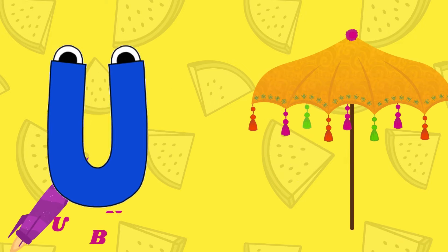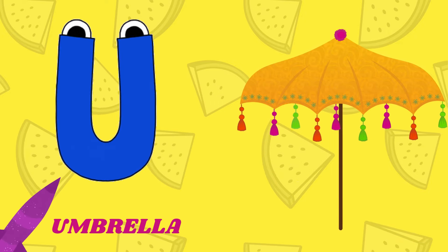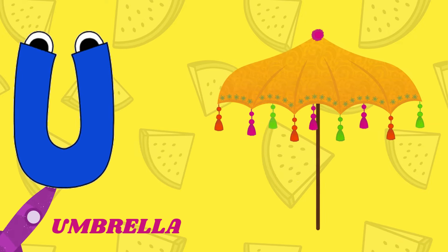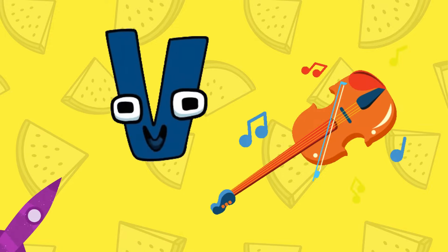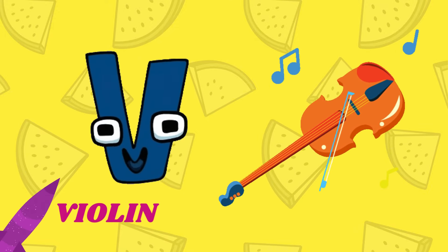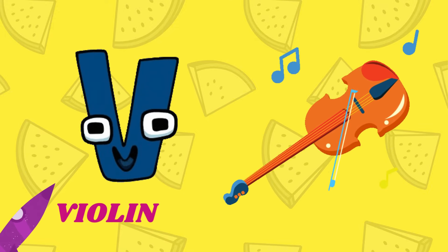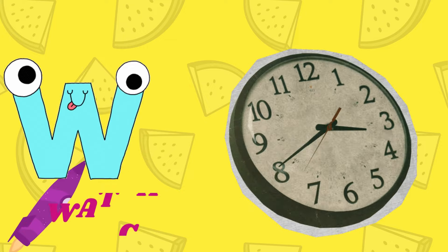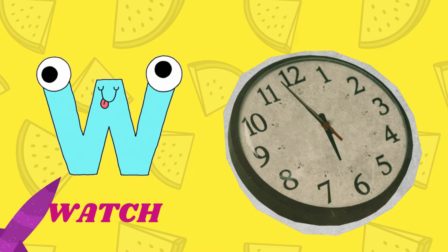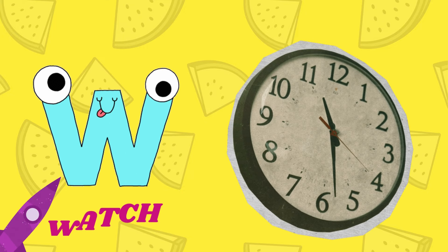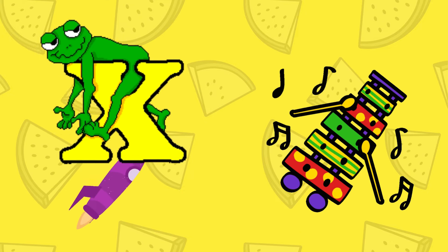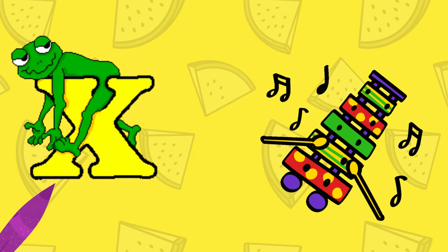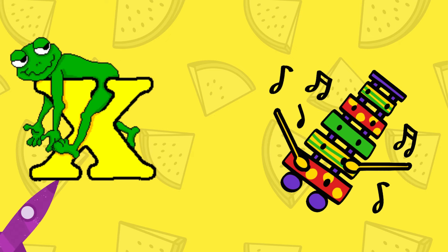U is for Umbrella, U-U-Umbrella. V is for Violin, V-V-Violin. W is for Watch, W-W-Watch. X is for Xylophone, X-X-Xylophone.